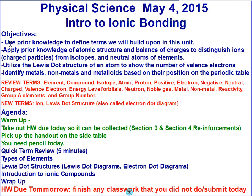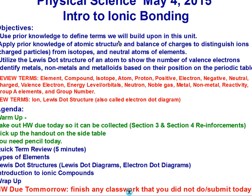Let's talk about our objectives. We're going to use prior knowledge to define terms we will build upon in this unit. Our second priority is to apply our prior knowledge of atomic structure and the balance of charges to distinguish ions — charged particles — from isotopes and neutral atoms of elements. Next, we'll utilize the Lewis dot structure of an atom to show the number of valence electrons. And then we're going to identify metals, nonmetals, and metalloids based on their position in the periodic table.